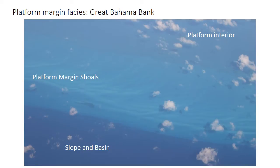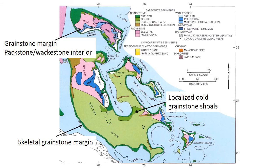This photo shows the southwestern margin of the Great Bahama Bank, the prototypical modern carbonate platform. The dark blue areas in the lower left are the platform slope and open ocean, where the seafloor drops off by literally thousands of feet over just a few kilometers. The edge of the platform is marked by large linear shoals separating the open ocean from the shallow, light blue platform interior in the upper right. This map shows the facies distribution in the Bahamas, color-coded by rock type and by the dominant allochem found in those rocks.